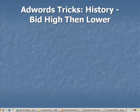This trick really applies to both history and relevancy. The trick here is to bid high at first and then slowly lower your bid. What this does is give you a high click-through rate — high meaning somewhere above 1% — from the very beginning of your campaign, from the very instant your campaign starts getting impressions.